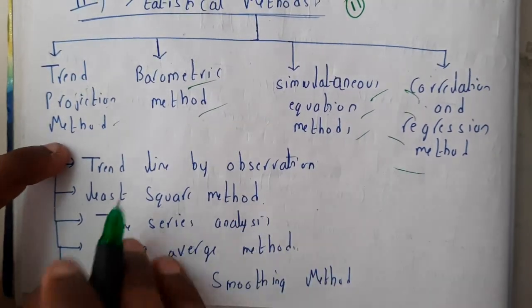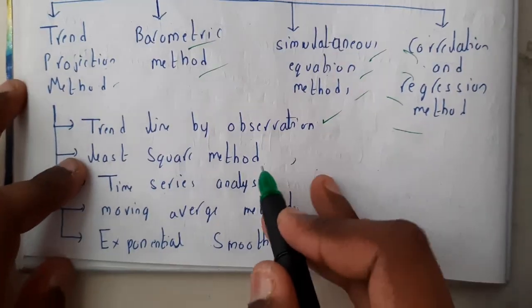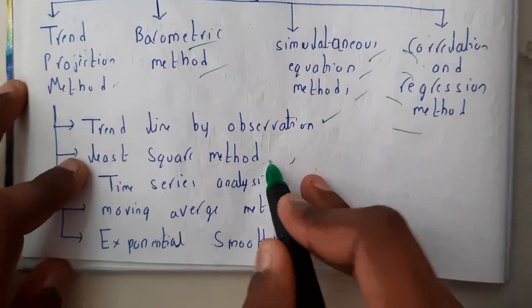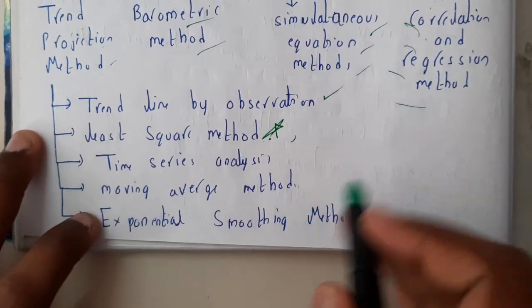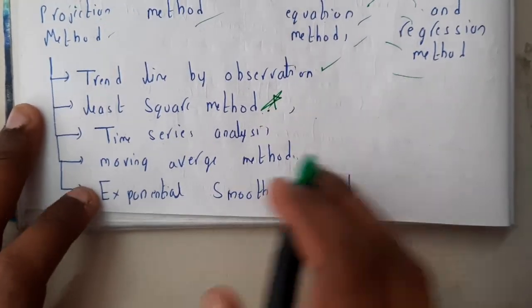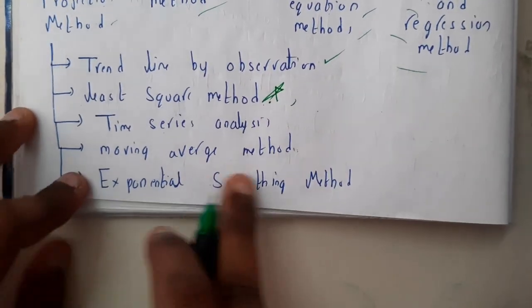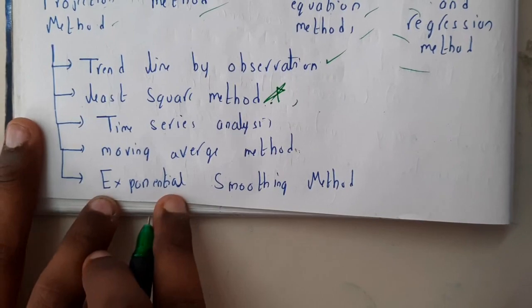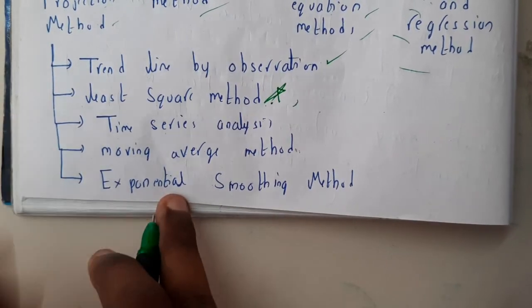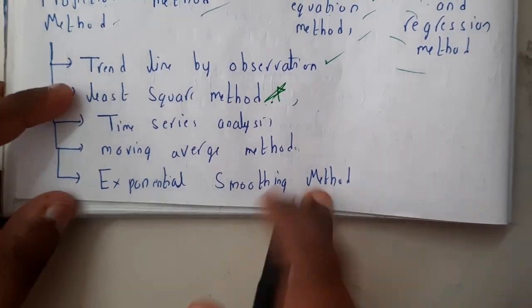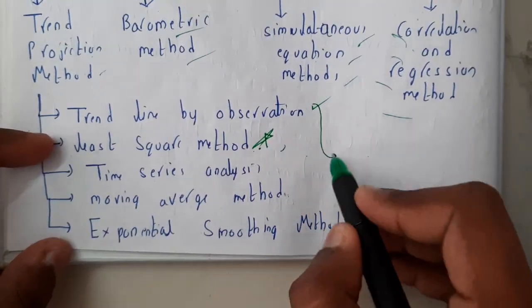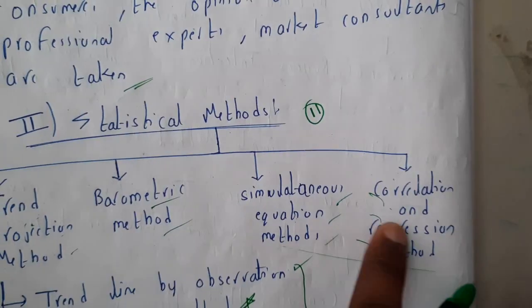The five types are: trend line by observation, least square method — please practice problems on that — time series analysis, moving average method, and exponential smoothing method. We'll be discussing these five methods in this lecture, and in the next lecture we'll go through the remaining three.